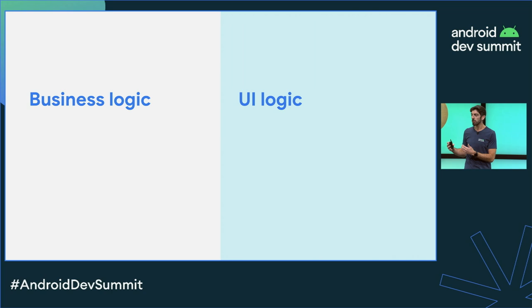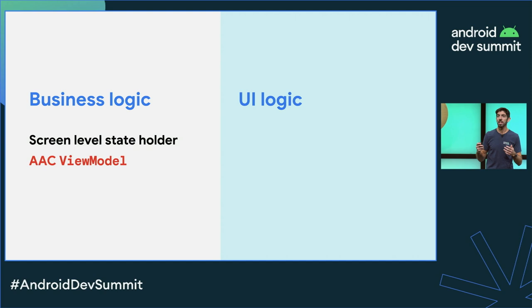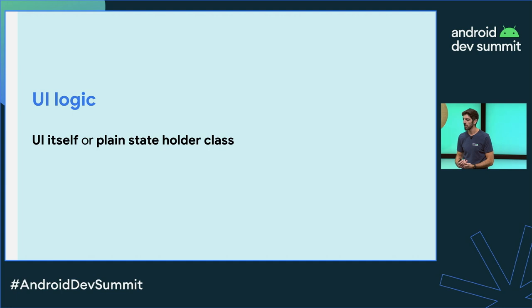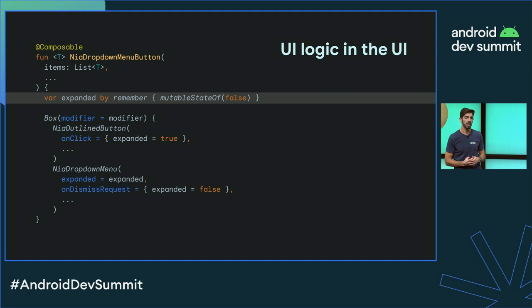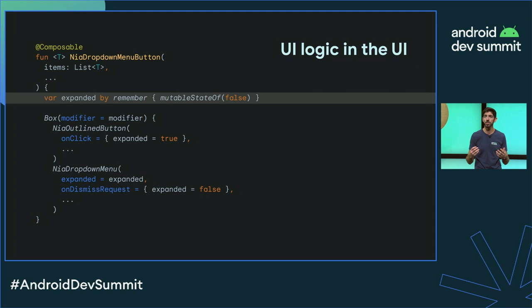So if the business logic complexity is handled in a screen-level state holder implemented with a ViewModel, the UI logic should be handled in the UI itself or in a plain state holder class. What to use depends on the complexity of the screen. Starting simple: here we are looking at a custom UI component that keeps track of whether or not it is expanded. The expanded variable is held and managed in the UI itself. But things can get more complicated — we can start adding more state and logic to the composable function — so we can delegate that complexity to a plain class.